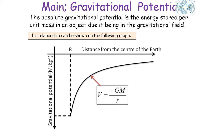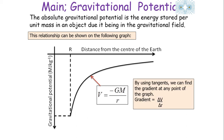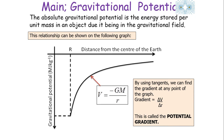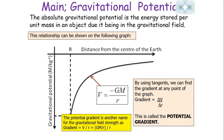We can show the relationship of V against R on a graph. By using tangents on the curve, we can find the gradient at any point, which is ΔV over ΔR — we call this the potential gradient: how steeply the potential changes in a field. The potential gradient is actually the gravitational field strength, because if V = −GM/R, dividing by R gives GM/R², which is just g. So the gradient of a V–R graph is the gravitational field strength at a particular point in that gravitational field.